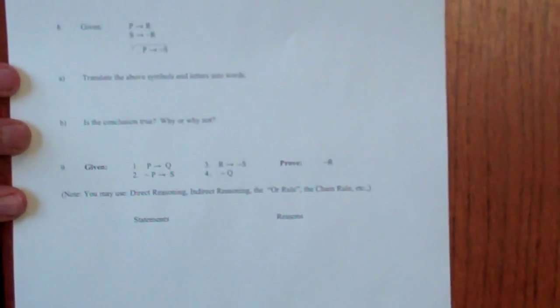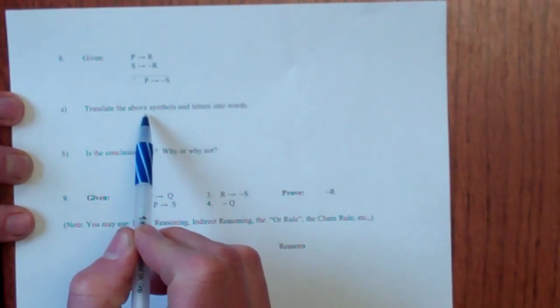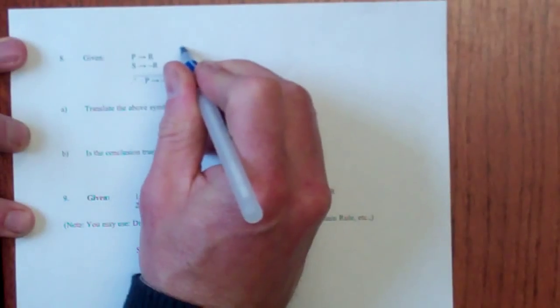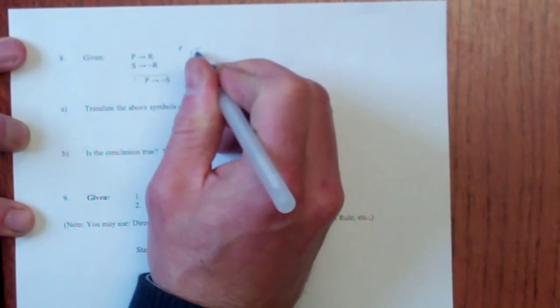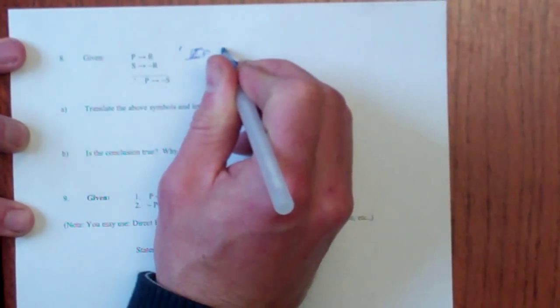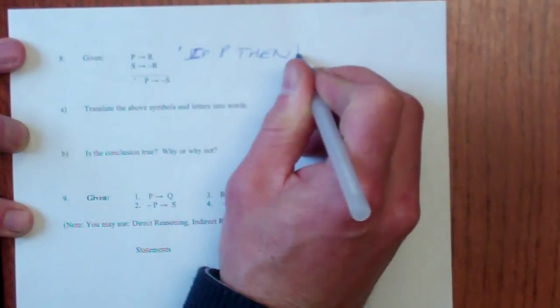Alright, on to the last page here. Given these things, translate the above symbols into letters and words. Alright, well this just means, here this means if, if P then R.